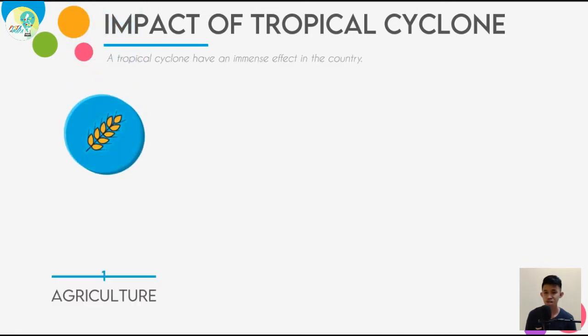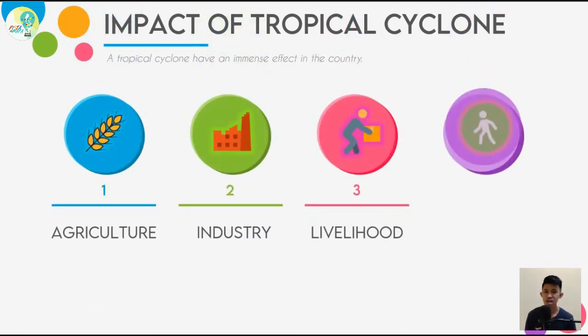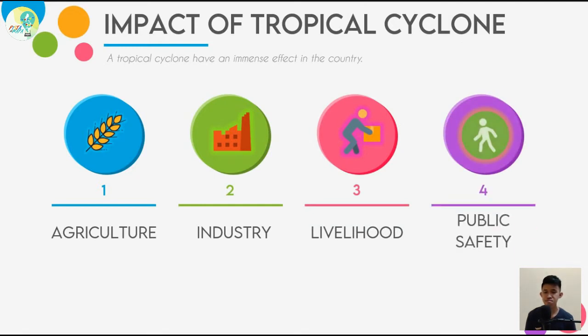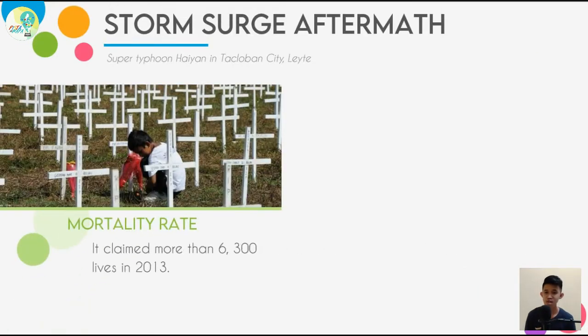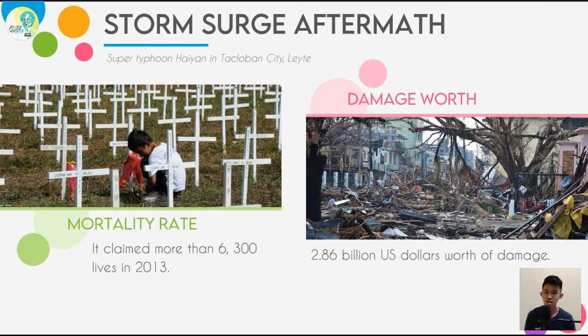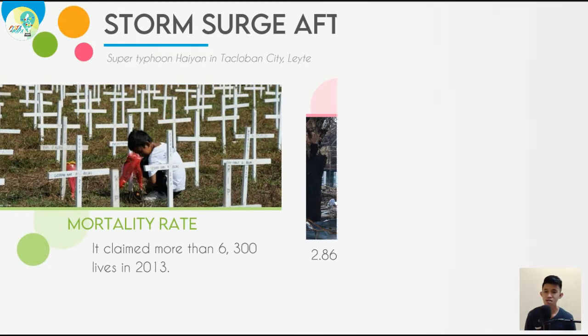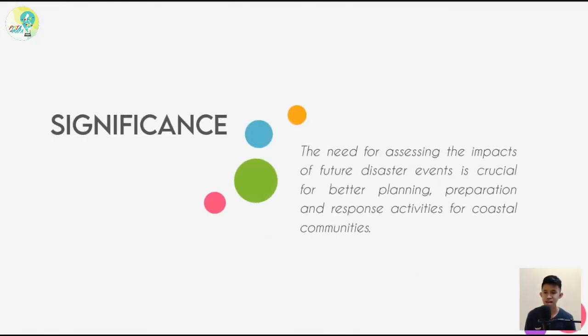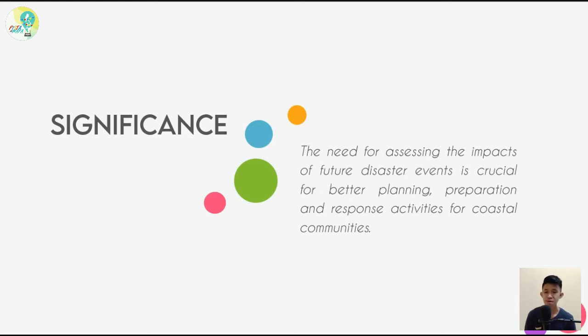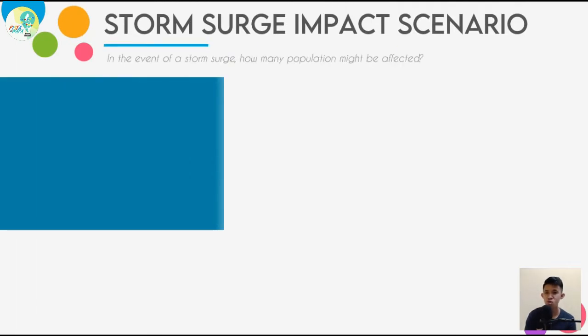A tropical cyclone has an immense effect on the country, especially with respect to agriculture, industry, livelihood, and public safety. In 2013, a storm surge in Tacloban City, Leyte, induced by super typhoon Yolanda, claimed more than 6,300 lives and US$2.86 billion worth of damage. Thus, the need for assessing the impacts of future disaster events is crucial for better planning, preparation, and response activities for coastal communities.